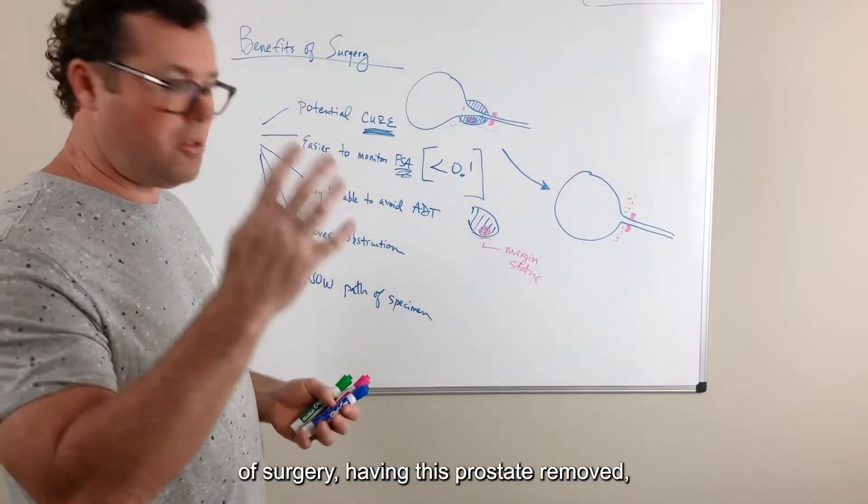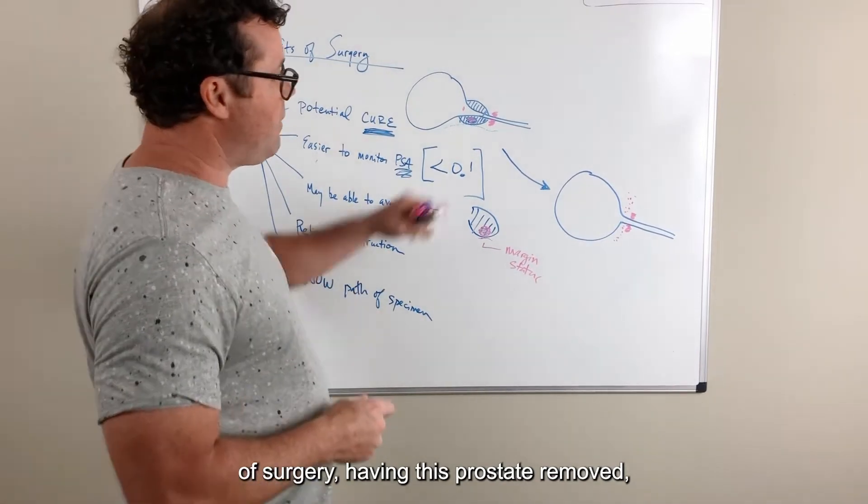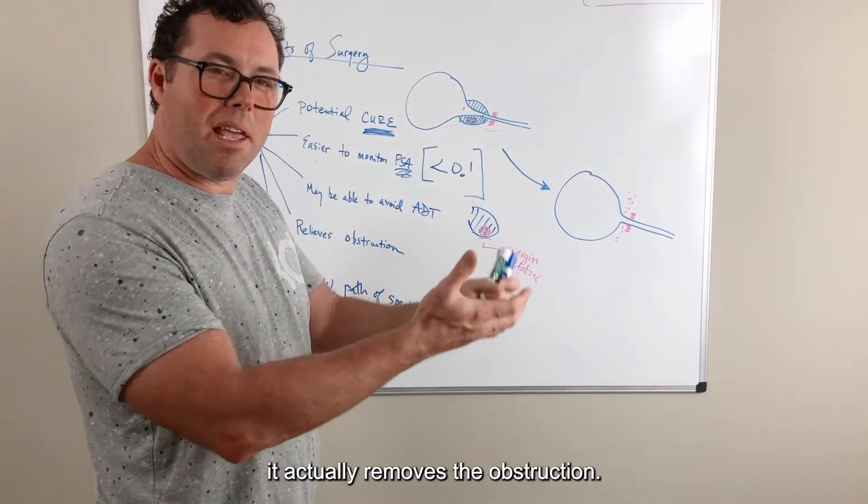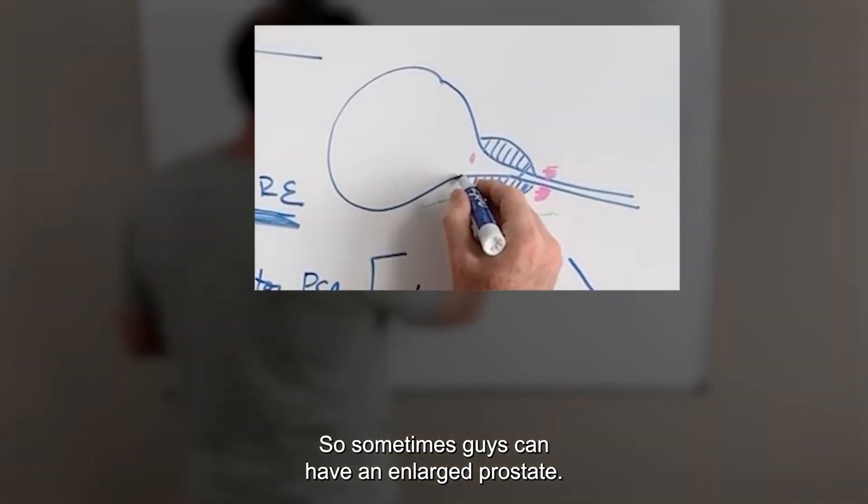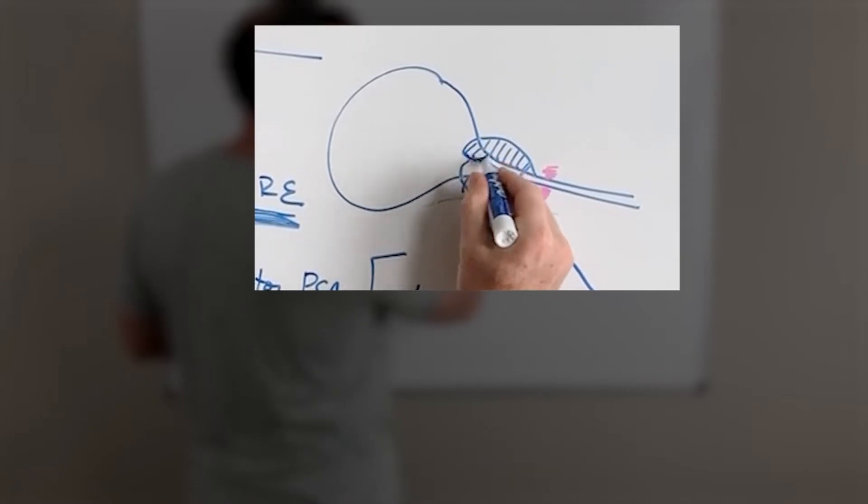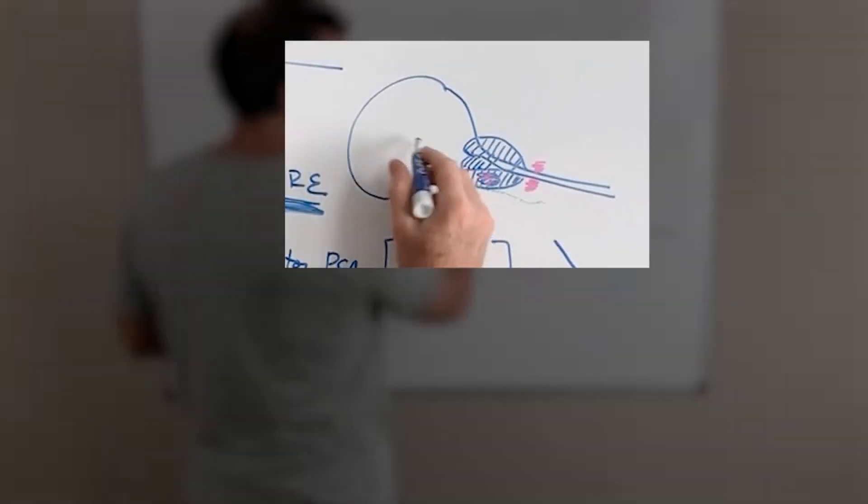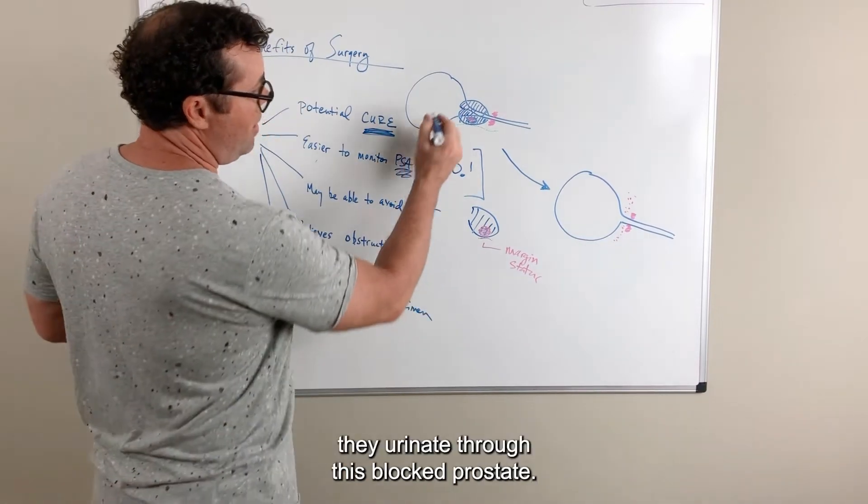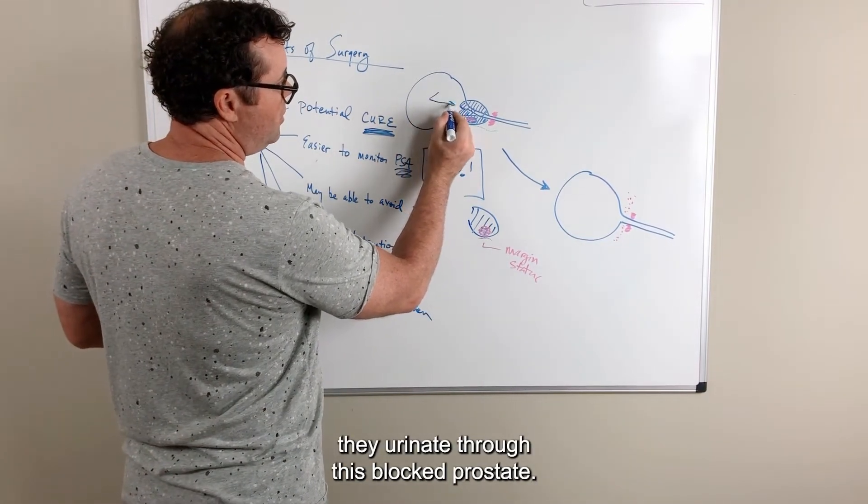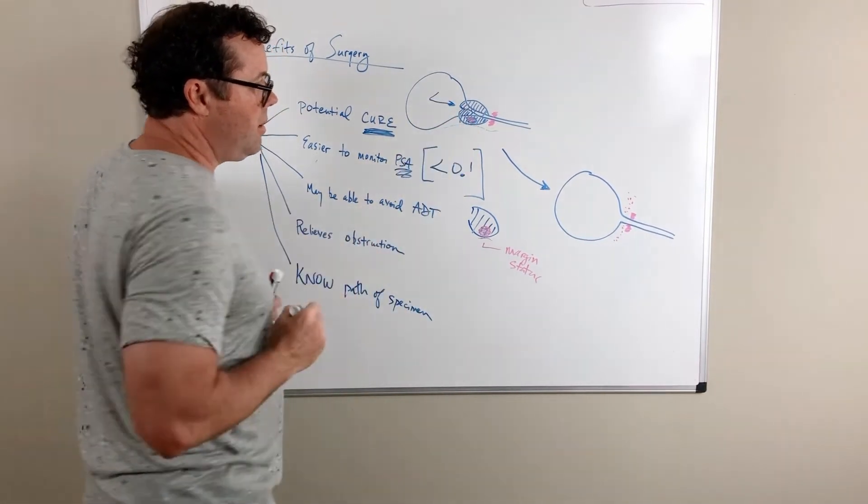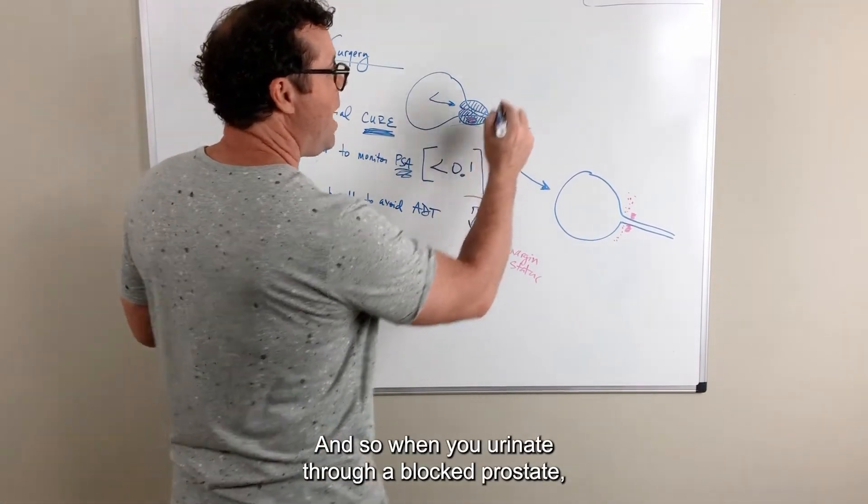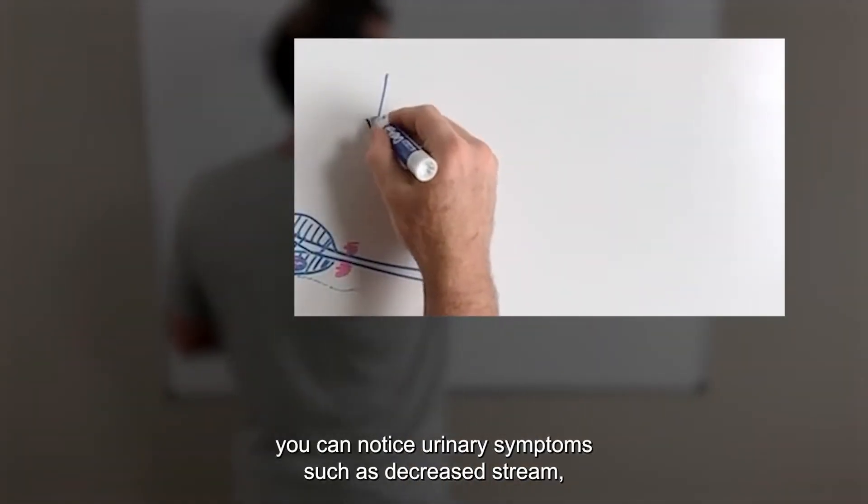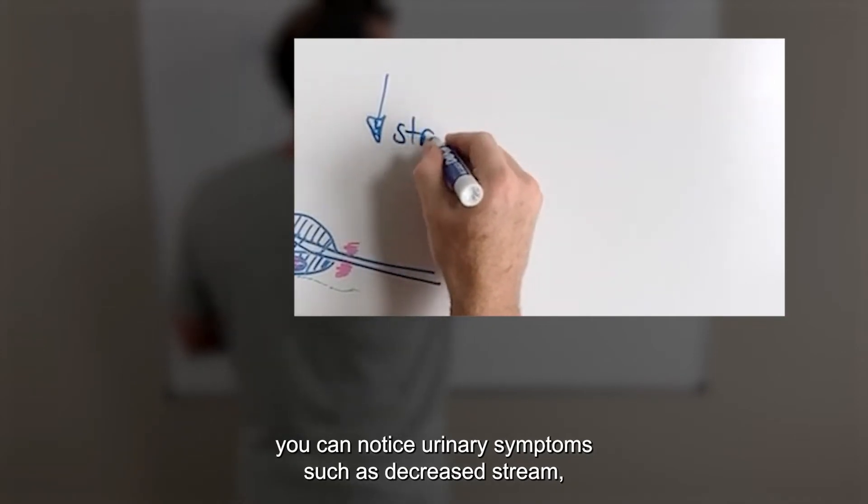The fourth benefit of surgery, having this prostate removed, it actually removes the obstruction. Sometimes guys can have an enlarged prostate. And so when they urinate, they urinate through this blocked prostate. And so when you urinate through a blocked prostate, you can notice urinary symptoms such as decreased stream,